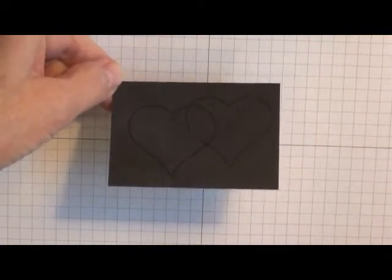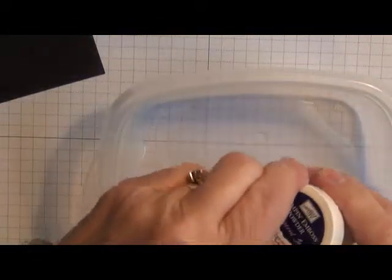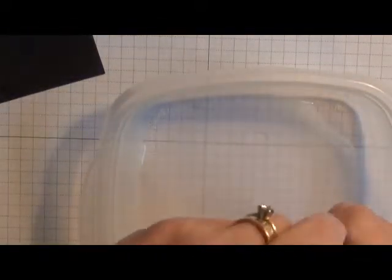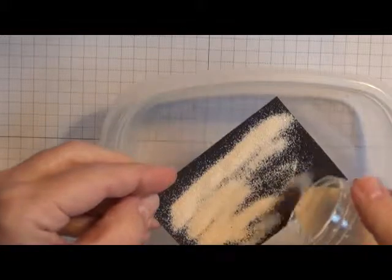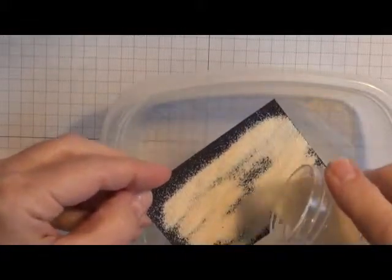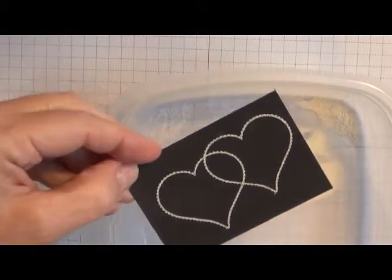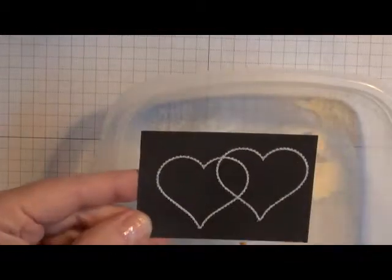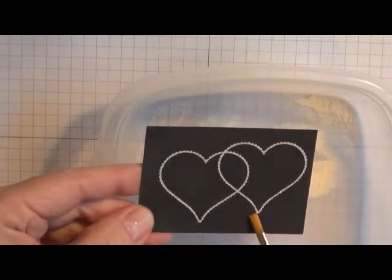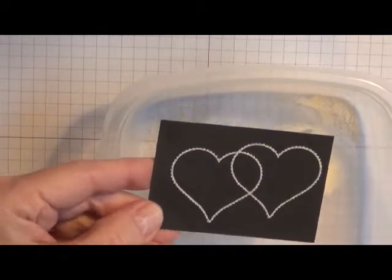Okay, then I'm going to take my white embossing powder and a little container to pour the excess in. I'm just going to sprinkle this over top of that Versamark ink and check to make sure it looks like I want. If there's any little specks I can always just brush them off. I've got one little speck there I don't want. Okay, looking good.